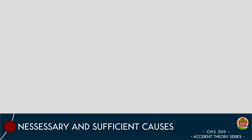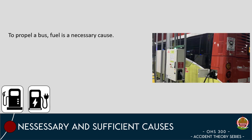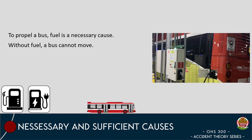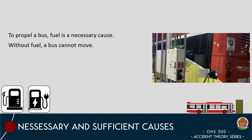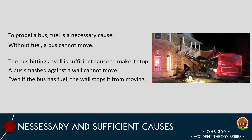An example of the difference between necessary and sufficient causes can be explained when discussing a city bus. Some sort of fuel, whether it be gasoline, diesel, or electricity, is necessary to propel the bus forward. However, driving into the side of a building would be a sufficient cause to make the bus stop. Simply put, fuel is required to propel the bus and a lack of fuel would stop the bus from operating. However, a large enough obstruction would be sufficient to stop the bus from moving regardless of the amount of fuel currently available.